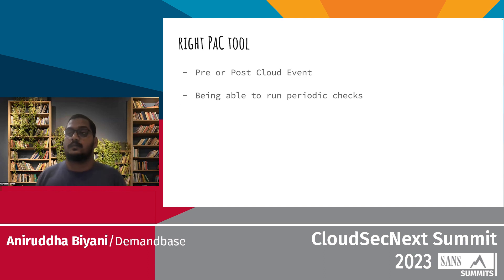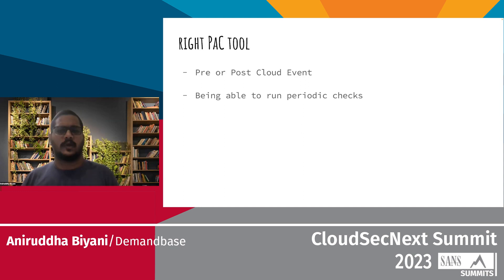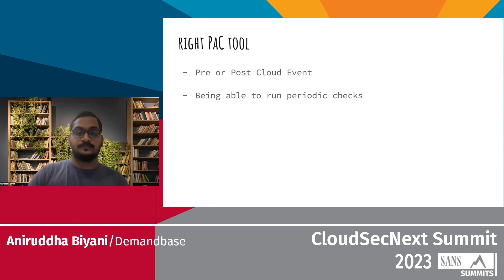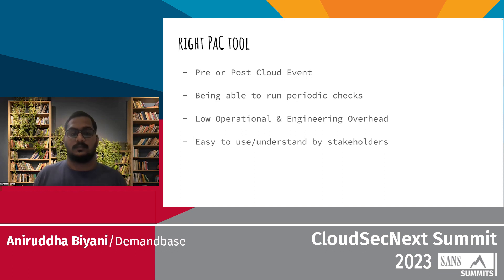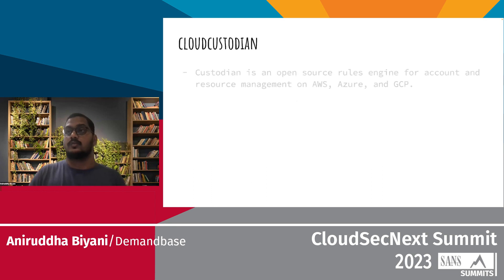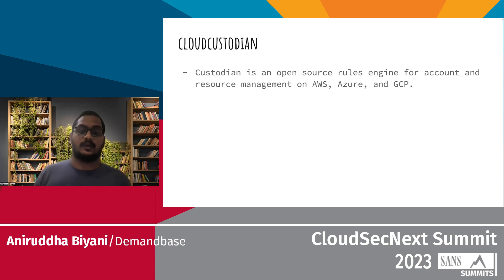Being able to run periodic checks — a point-in-time check of all resources and infrastructure across our organization — was important. Low operational and engineering overhead meant we didn't want to spend a lot of time building something. Easy to understand and use by stakeholders was something we really wanted. Taking all this into account, Cloud Custodian seemed like a really good choice.